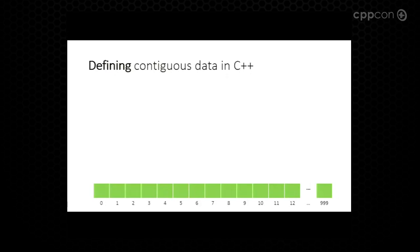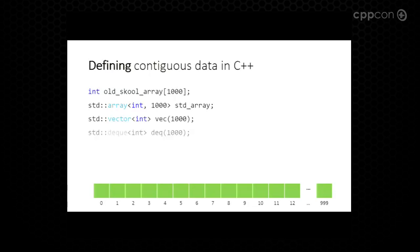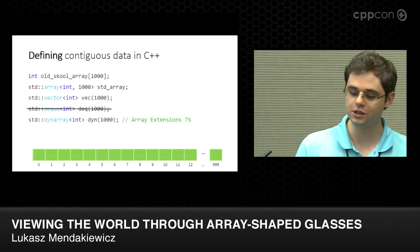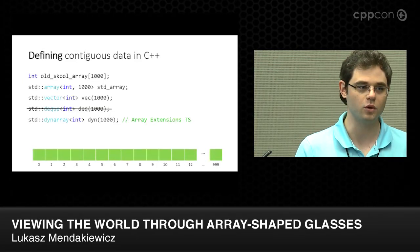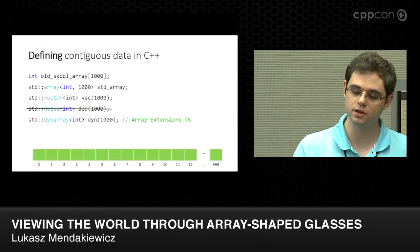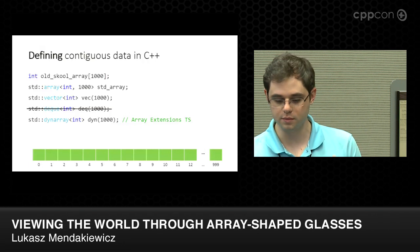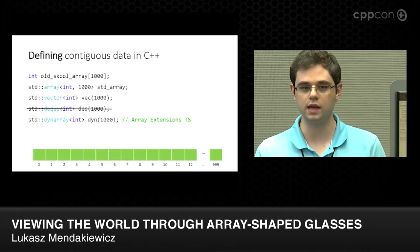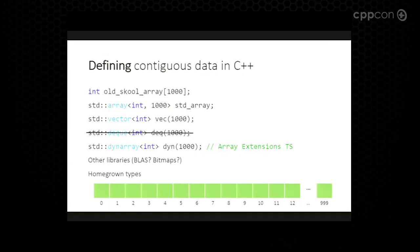Suppose you want to allocate a thousand elements in a contiguous manner. You could do it old-school with a plain old C array. You could use std::array. You could use std::vector. Or thirdly, you could use std::deque, which is mostly contiguous, although it really has chunks of contiguous data, so it would not be good for what we'll be talking about today. There are also new proposals like std::array from the Array Extensions TS, other libraries, and homegrown types. Each has different properties — some are statically sized, some dynamically sized, some resizable, some fixed.